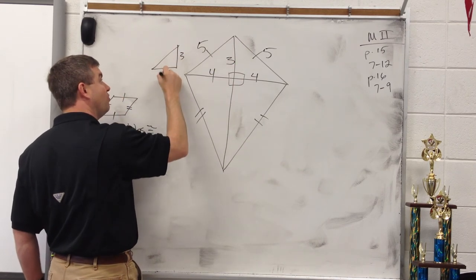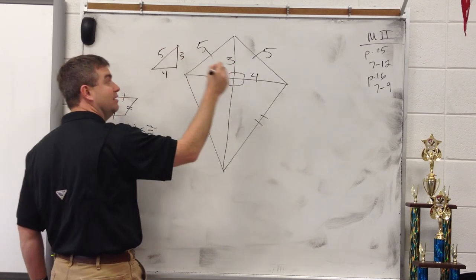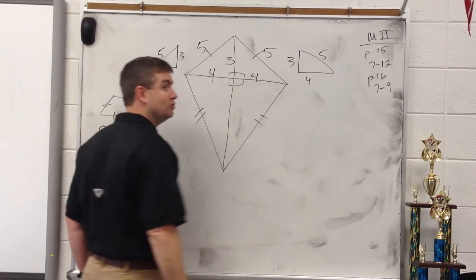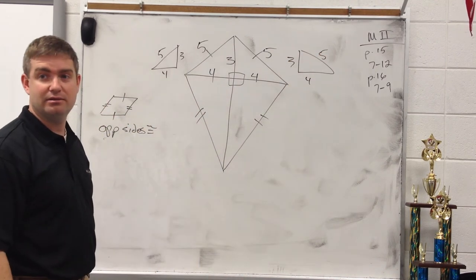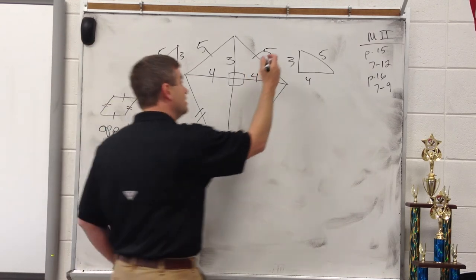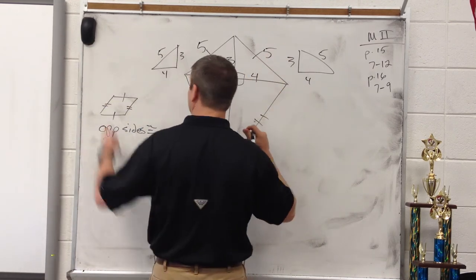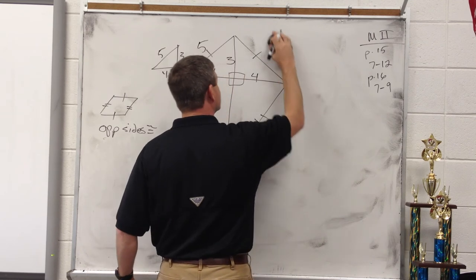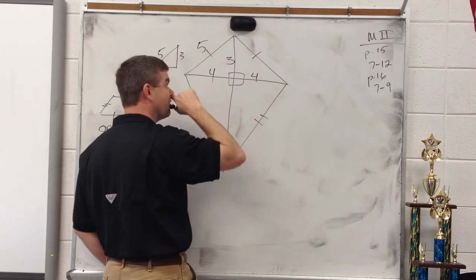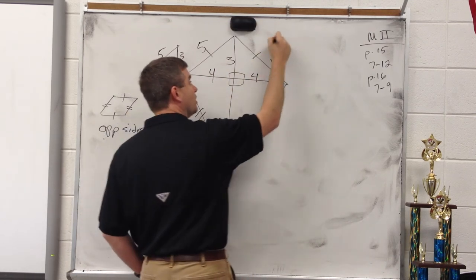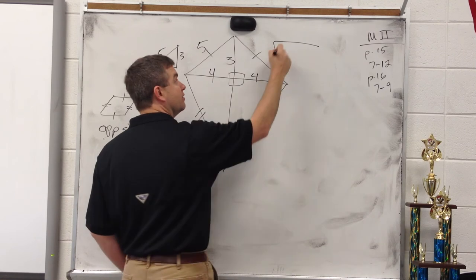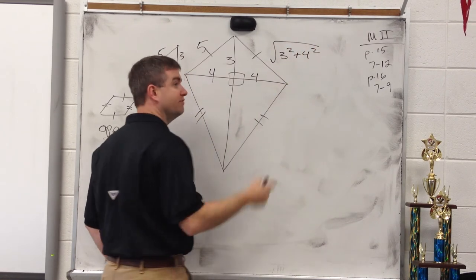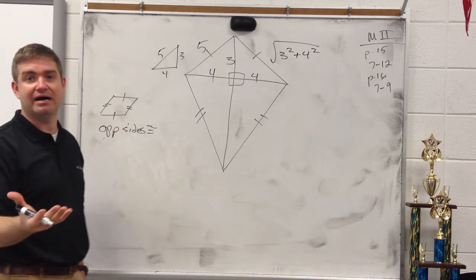Everybody get your calculator out. If one leg is 4 and the other is 8, find the missing hypotenuse. It would be the square root of 4 squared plus 8 squared. That gives 4 root 5, and if we round to the nearest hundredth, that's 8.94.